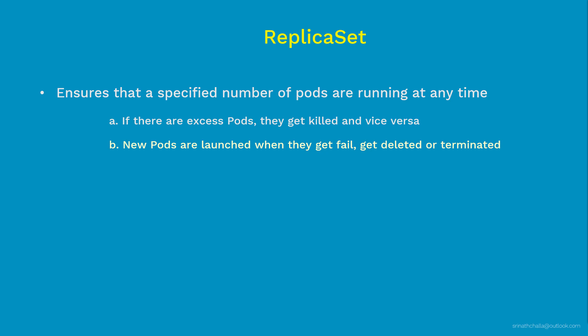One very important point to note: how is the ReplicaSet aware of the pods it needs to manage? What is the link between the ReplicaSet and those pods? The answer is labels. Labels are nothing but a tag given to a pod. Using labels, we relate the ReplicaSet to the pods it needs to manage by mentioning the exact same labels inside both the pods and the ReplicaSet.